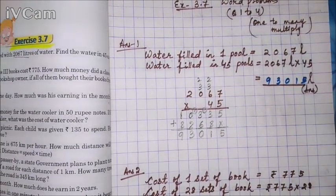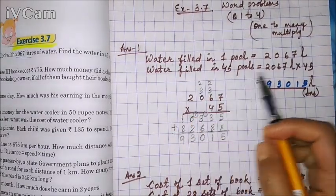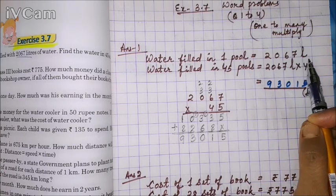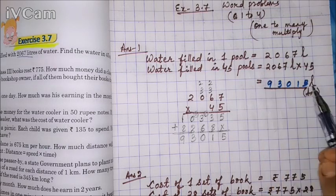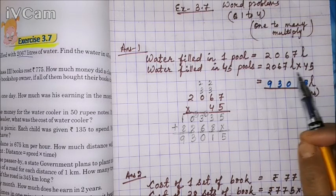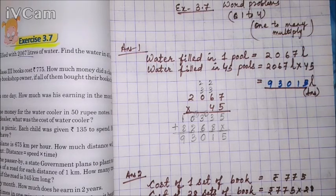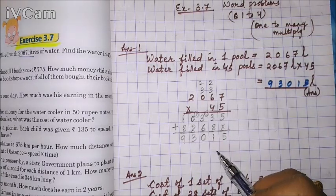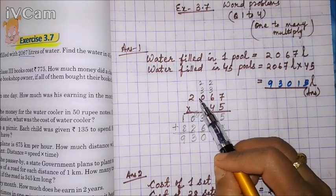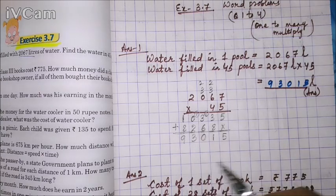Write in your copy: water filled in one pool = 2067 L. Then water filled in 45 pools = 2067 L × 45. Don't forget to write the unit — always write the unit. Leave enough space to do the working. Write 2067 in separate boxes and multiply by 45.